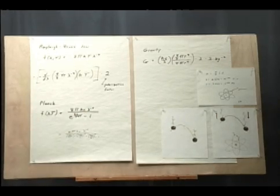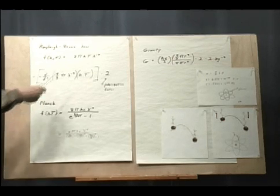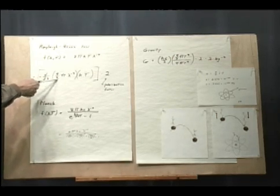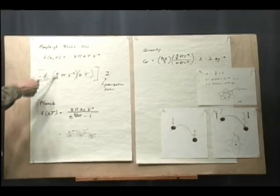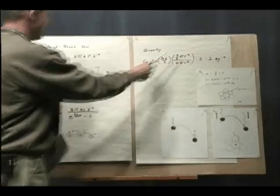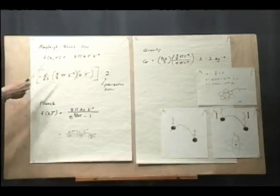The similarity between the Raleigh-Jeans law, for example, we have, now this doesn't look like four-thirds pi r cubed, and here's the volume of the mass, but what we have is a cube,